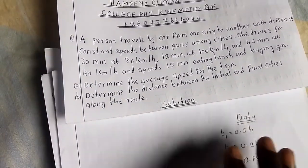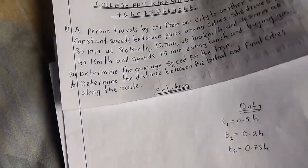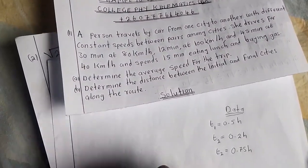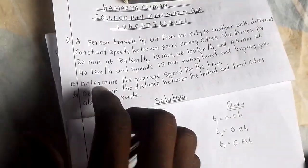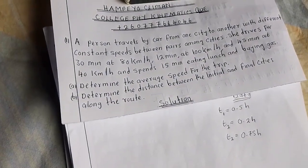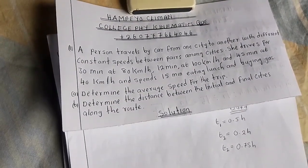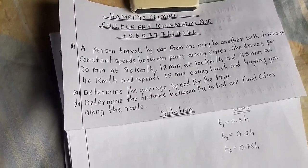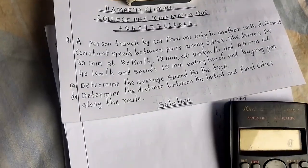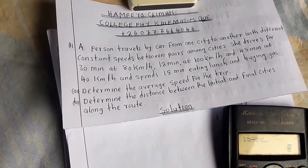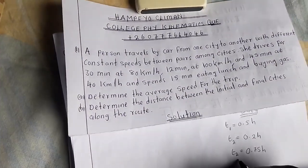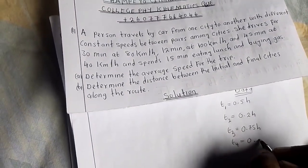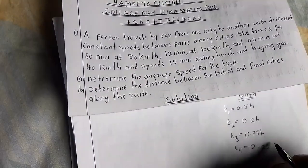This is how you go about these questions — very simple. We have also been told that this person spends 15 minutes eating lunch and buying gas, so we convert that: 15 divided by 60 gives 0.25 hours. That is time four.